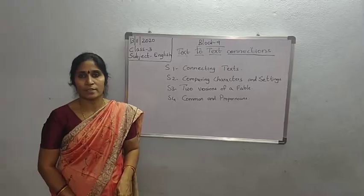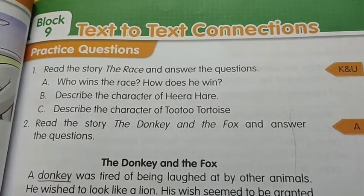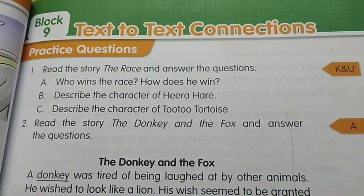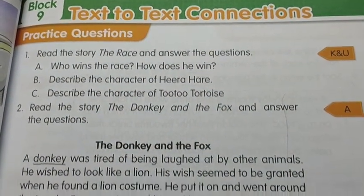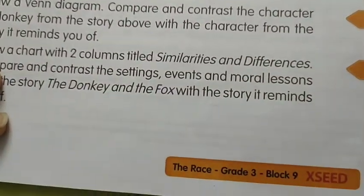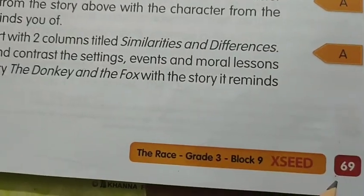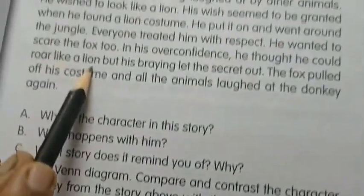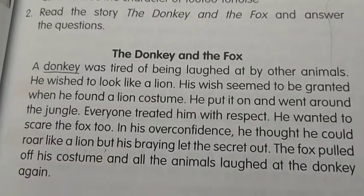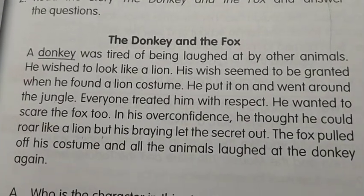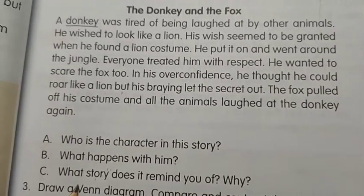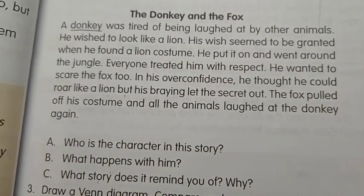Open your English readers. Block 9, text to text connections, page number 69. See here — read the story 'The Donkey and the Fox' and try to write the answers in your rough book. A, B, C questions are there. Try to write the answers in the rough book.